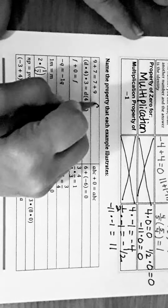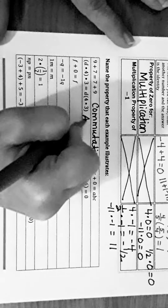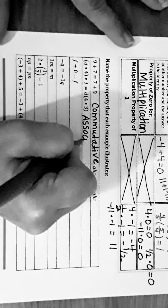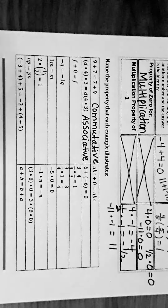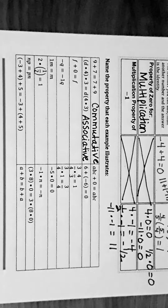So to recap: changing the order is commutative; changing the grouping is associative; adding zero and getting itself is additive identity; multiplying by one and getting itself is multiplicative identity; adding opposites to get zero is additive inverse; multiplying reciprocals to get one is multiplicative inverse; multiplying by zero gives you zero; and multiplying by negative one gives you the opposite.